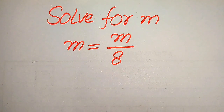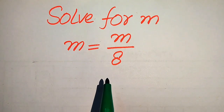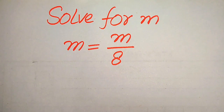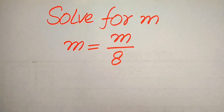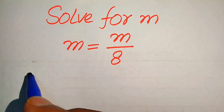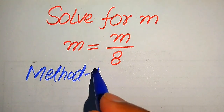Hello everyone. How to solve this problem for the values of m if we have m equals m divided by 8. First we find all the roots of this equation, and at the end we will check whether these roots are a solution or extraneous roots. I will explain the term 'extraneous' at the end of this problem. We solve this problem using two methods.